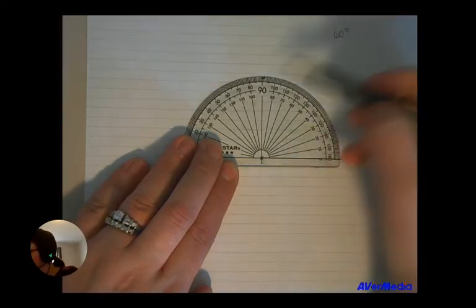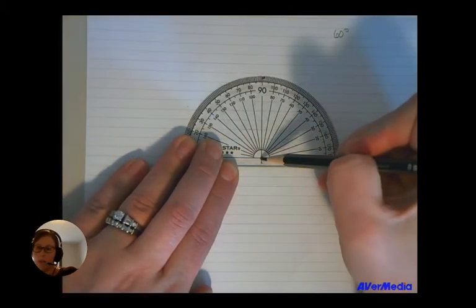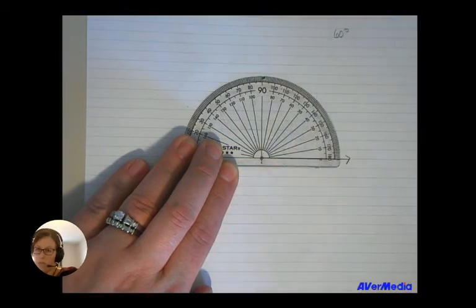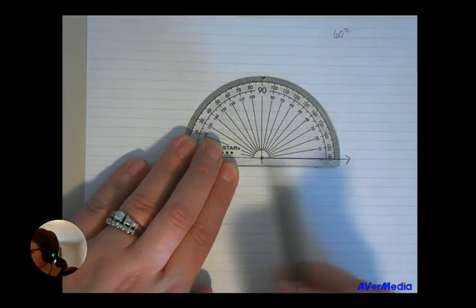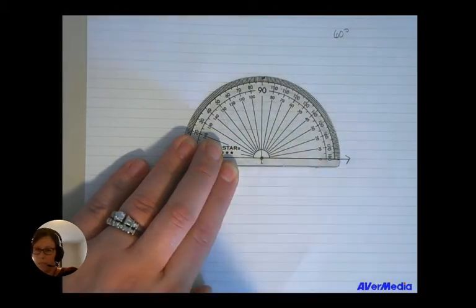And so you can see that my 90 and 0, where they intersect here on my protractor, it is where that nice big dot I drew for my ray was. And my 0 line here lines up with the bottom ray.